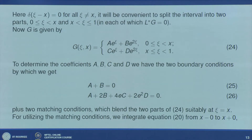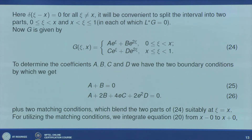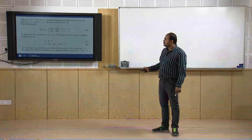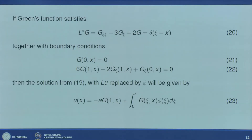We use the property of the Dirac delta function: δ(ξ−x) = 0 for all ξ ≠ x. We split our interval into two parts: (0, x) and (x, 1). In each sub-interval, δ(ξ−x) = 0, so g satisfies the homogeneous equation L*g = 0. Therefore g can be found by solving L*g = 0, which is a simple linear ODE with constant coefficients.